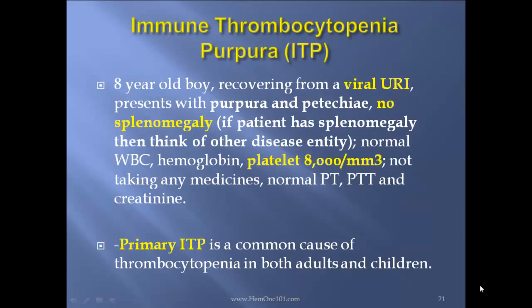Immune thrombocytopenic purpura. Case: an 8-year-old boy recovering from a viral URI presents with purpura and petechiae, no splenomegaly. If the patient has splenomegaly, think of another disease entity. Normal WBC and hemoglobin, platelet count of 8,000, not taking any medicines, normal PTT and creatinine. Primary ITP is a common cause of thrombocytopenia in both adults and children.